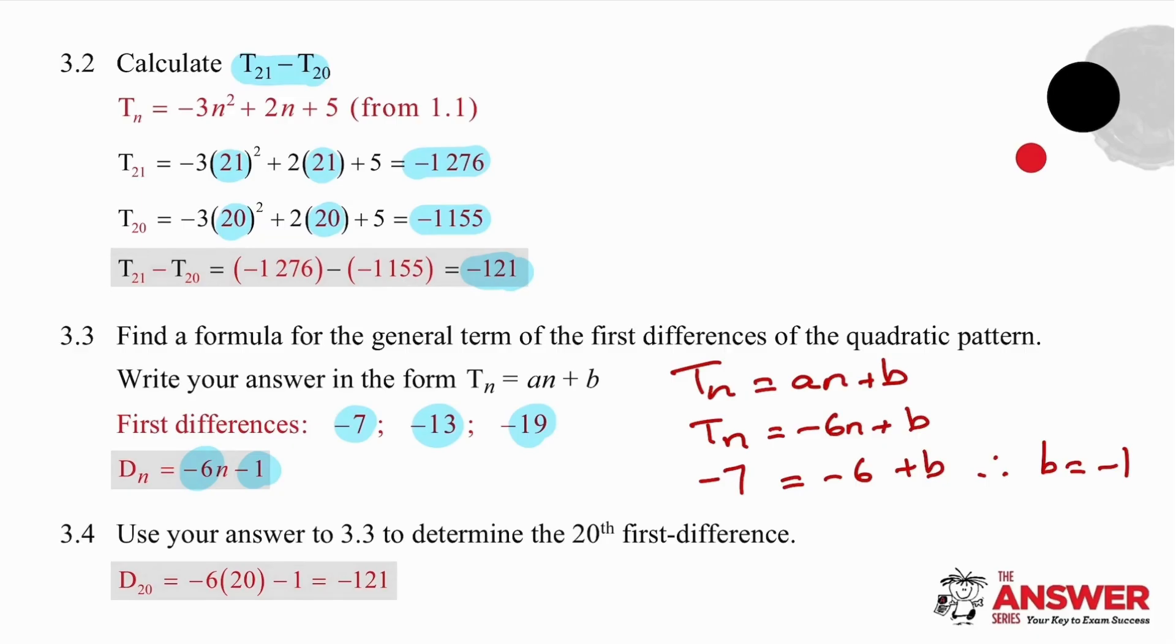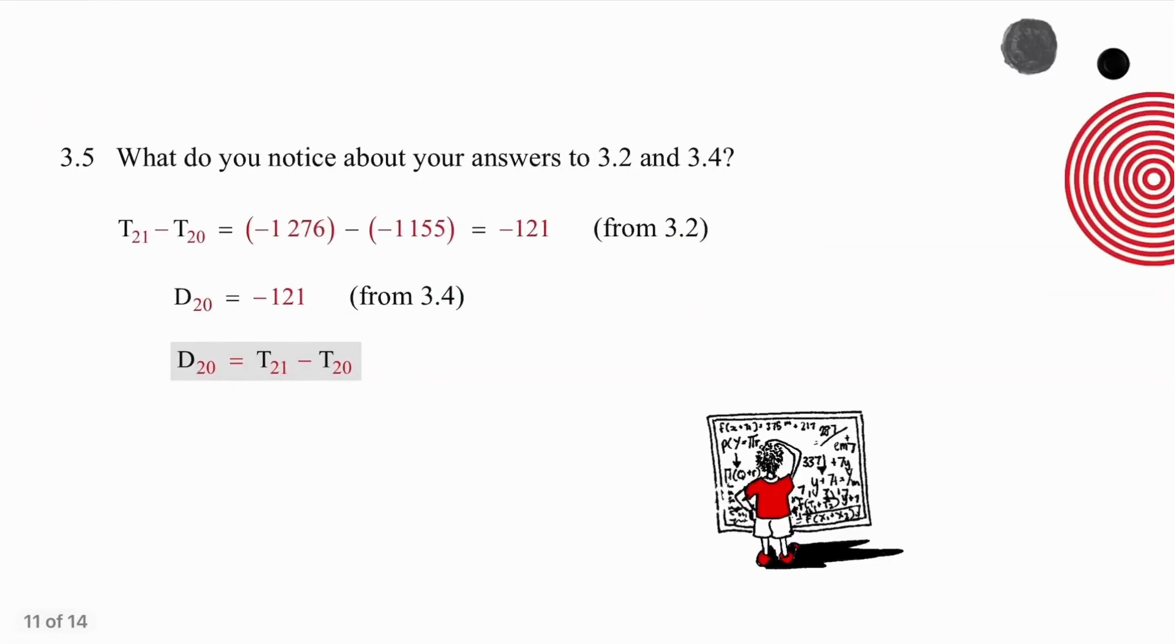In 3.4, we are just going to substitute our n value, which is the difference that they're asking us to work out. The 20th first difference is literally just substitution into the formula that we worked out in 3.3. In 3.5, we are being asked to explore the relationship between the answers to 3.2 and 3.4. And you will have noticed, in both cases, those answers are the same. So, the deduction that we are going to make is that the 20th difference is the same result as T21 minus T20. And that's very important. Any difference that you work out always has an n value of the lower positioned term. So, the fifth difference will be the difference between the sixth and the fifth terms.